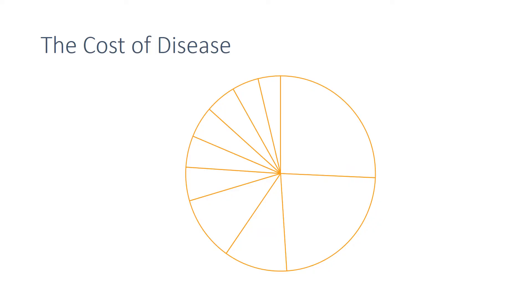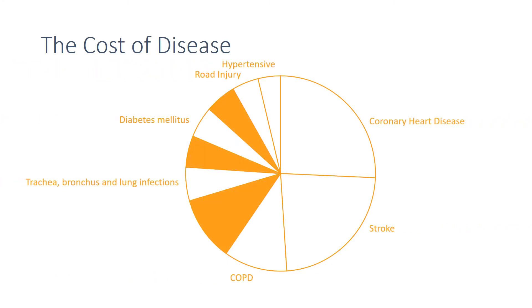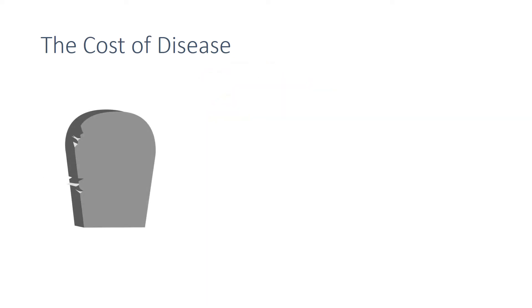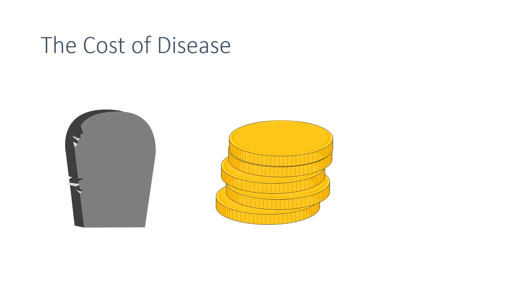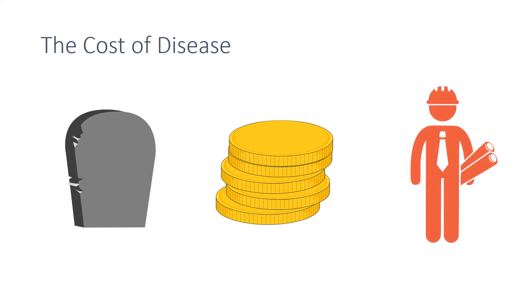Of the top 10 most deadly diseases, seven are non-communicable diseases. These diseases have a dramatic impact on people's lives. At an individual and family level, people will lose loved ones. At a local level, the community will have to bear the cost of supporting the ill, and additionally at a national and global level, the economy can suffer, especially when the disease affects the younger working age population.